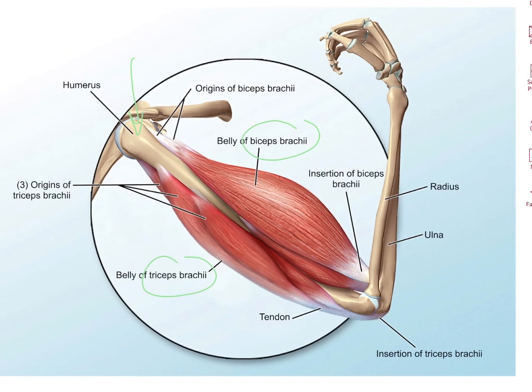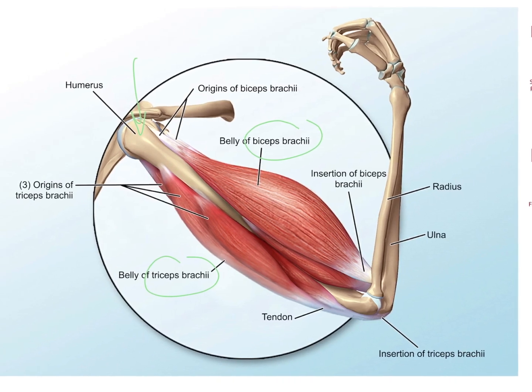When a muscle contracts, it draws one articulating bone toward the other. This is the reason why muscles have an origin and an insertion. An origin is the attachment to the stationary bone and an insertion is the attachment to the movable bone, so the action is going to take place on the insertions. For example, the biceps brachii has an insertion over here and therefore this area of the elbow can move.